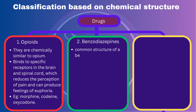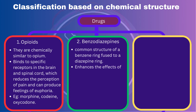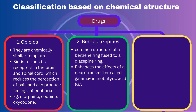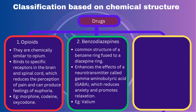Benzodiazepines: These drugs have a common structure of a benzene ring fused to a diazepine ring. Benzodiazepines enhance the effects of a neurotransmitter called gamma-aminobutyric acid (GABA), which reduces anxiety and promotes relaxation. They include drugs such as Valium, Ativan, and Xanax.